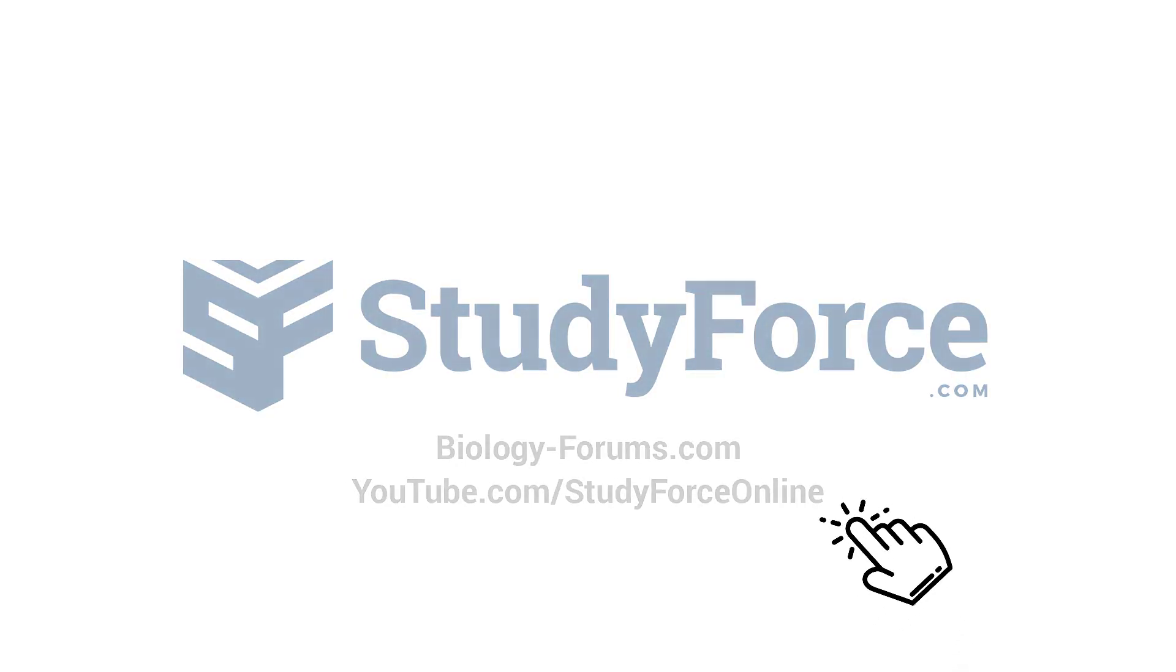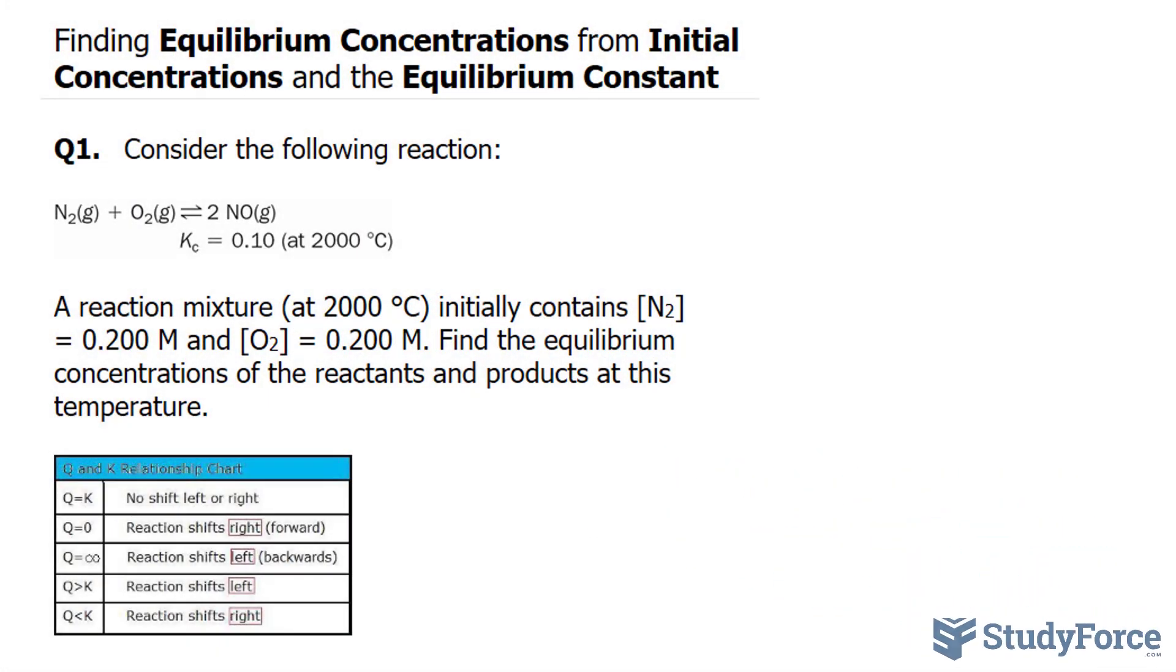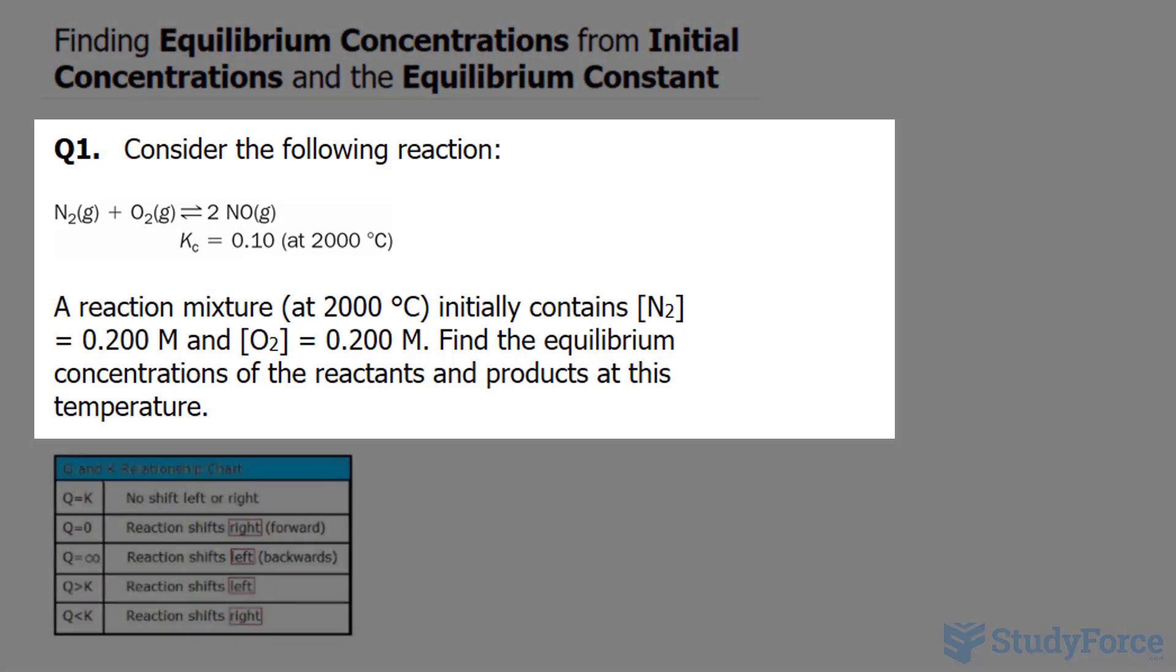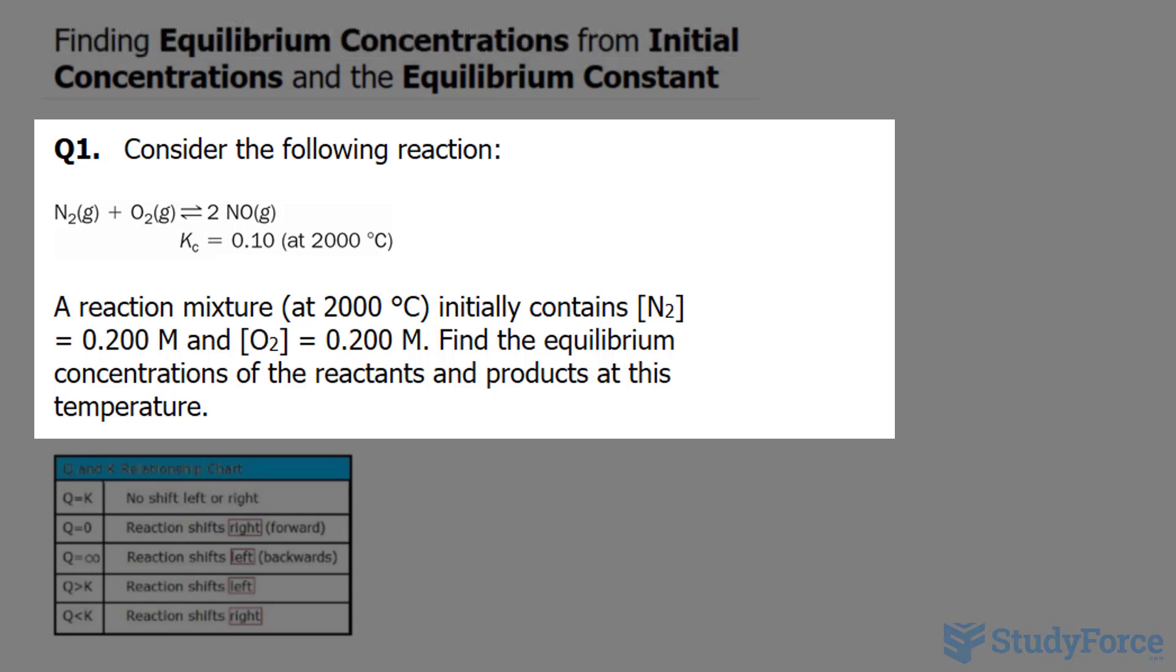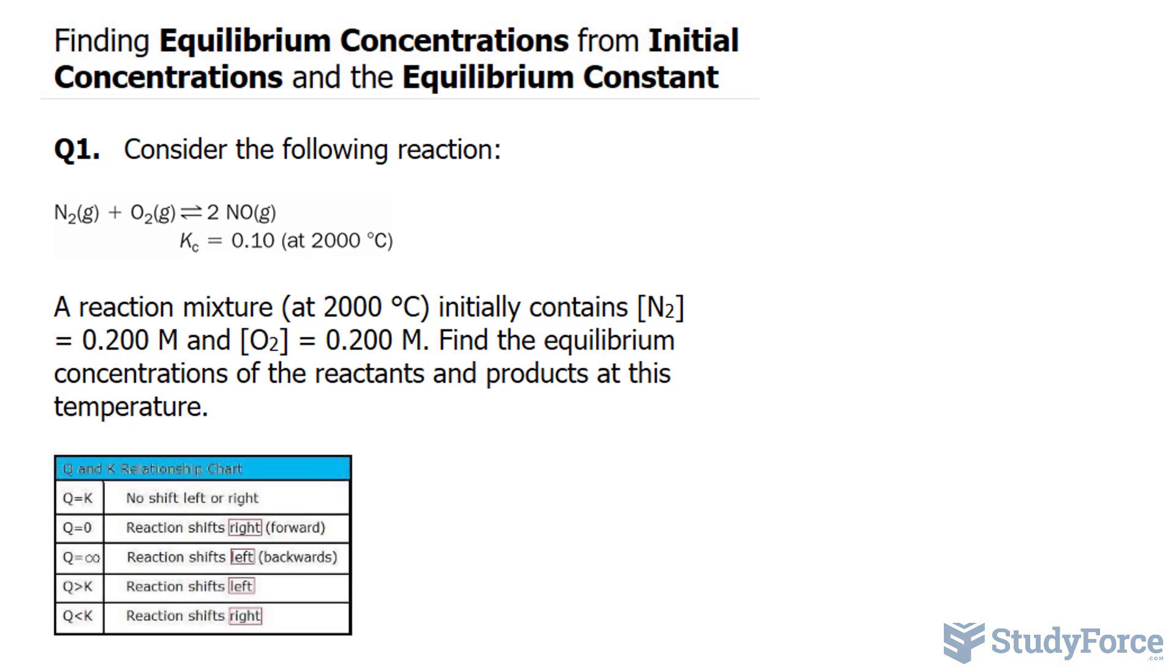In this tutorial, I'll show you how to find the equilibrium concentrations from initial concentrations and the equilibrium constant. Let's start with question one. Consider the following reaction: A reaction mixture at 2000 degrees Celsius initially contains N2 of 0.200 molar and O2 of 0.200 molar.